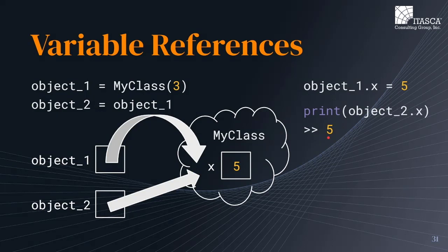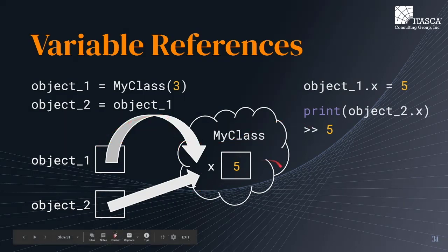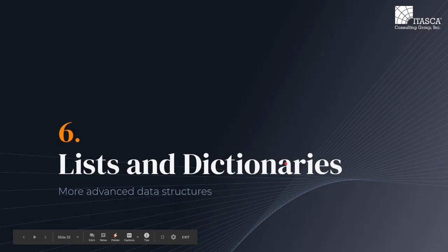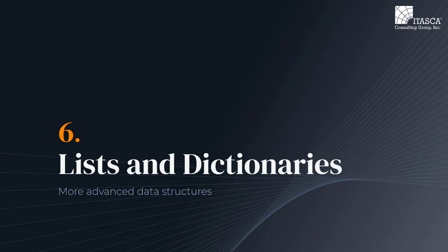So whenever you want to actually copy an object within Python, you basically have to create an entirely new object and simply set the object's data correspondingly. You can't simply state that the new variable is equal to the old variable, else you'll be running into this error with variable referencing. Moving on, now that we've seen how you can use classes and objects to create your own data types, we can move on to covering more advanced data structures available within Python, namely lists and dictionaries.